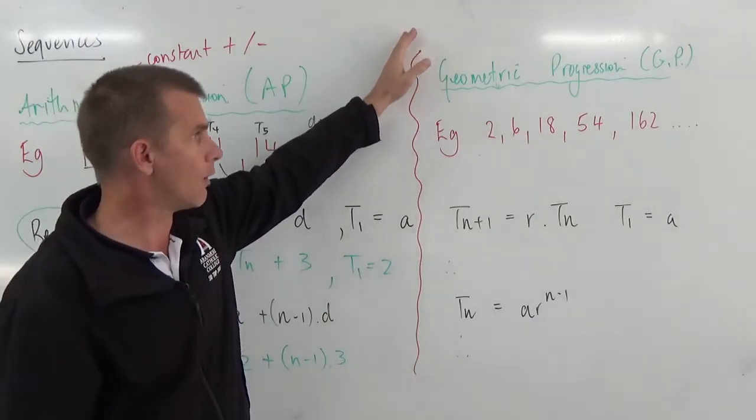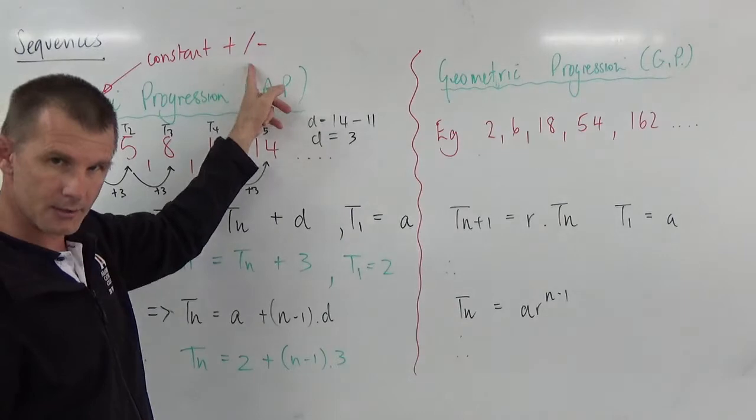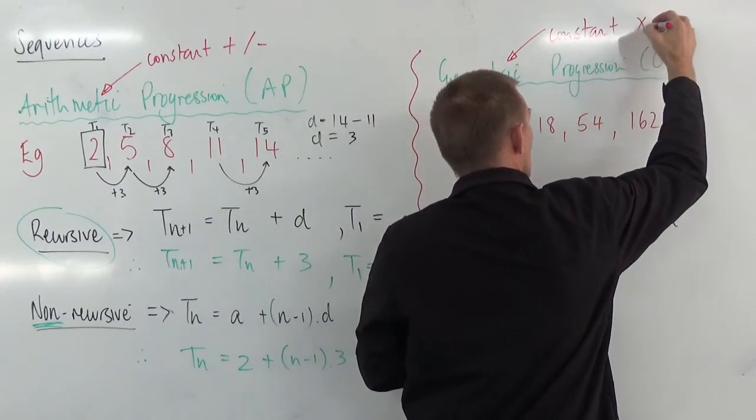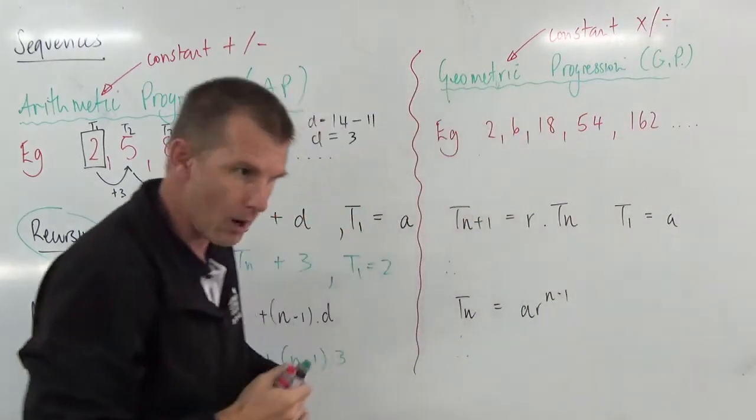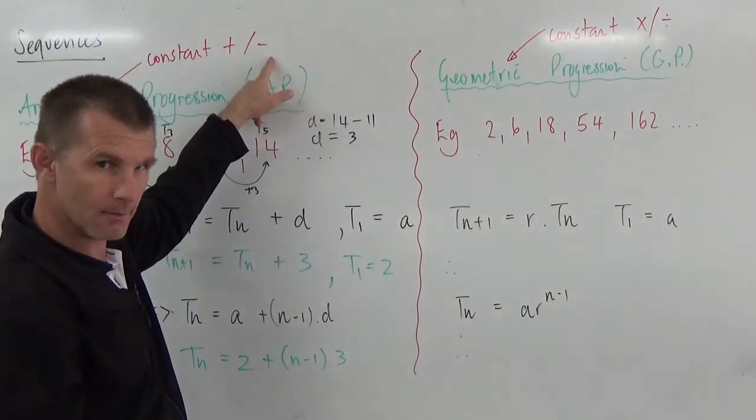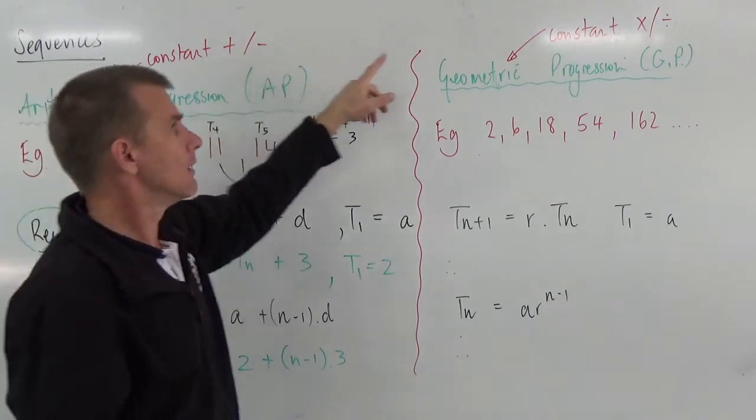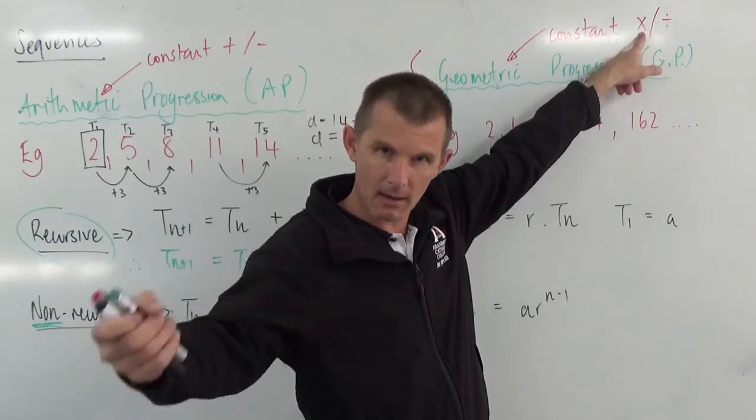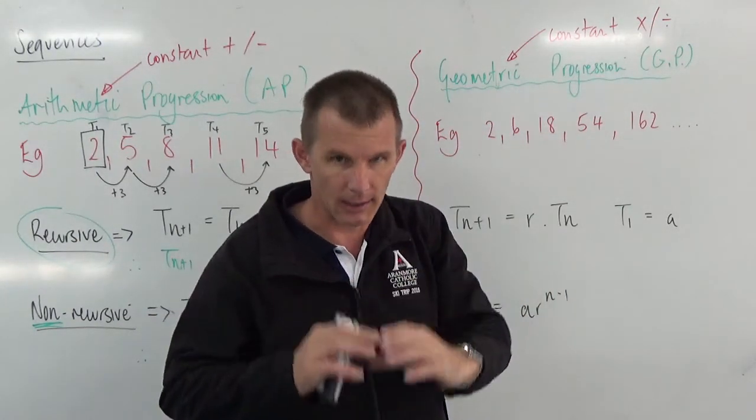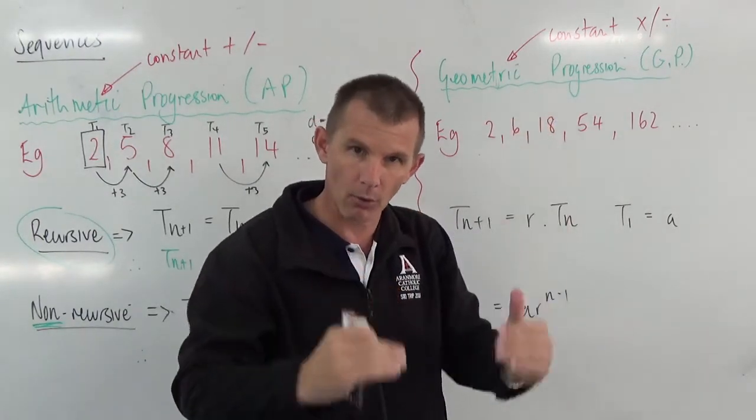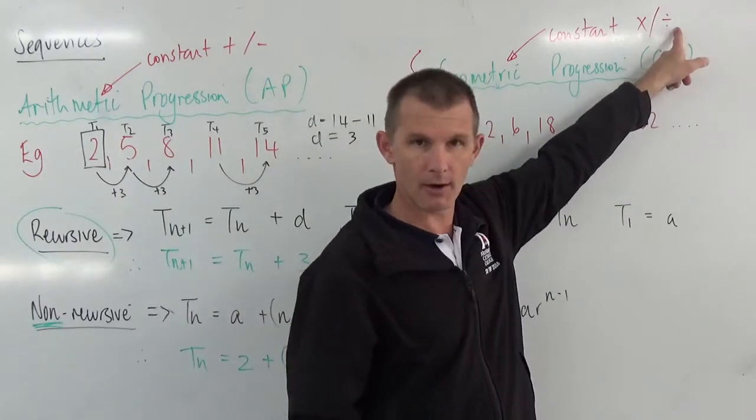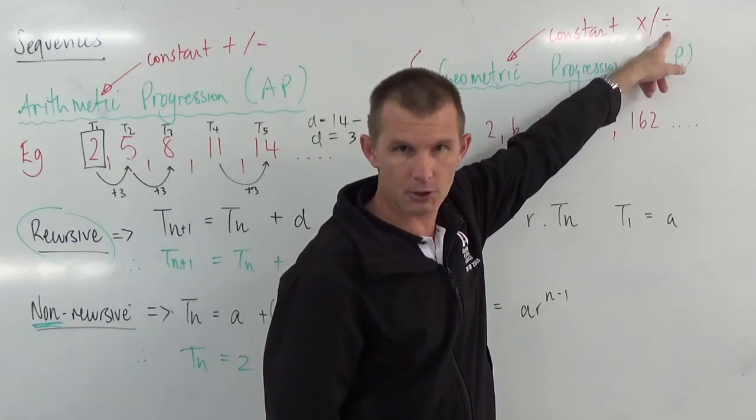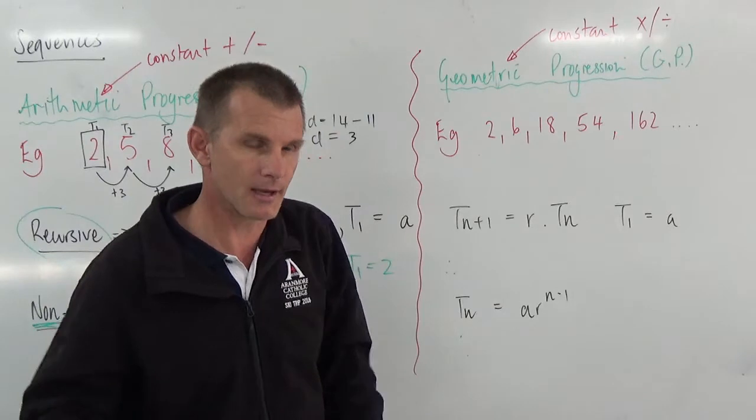Geometric progressions, they are ones where we're not looking for a constant addition or subtraction. We're actually now looking at constant multiplication or division. In a similar way, I could add a negative number and that's the same as subtracting. If I multiply by a number bigger than one, then my terms are going to be getting bigger. If I multiply by a number that is less than one, between zero and one, my terms will get smaller. That's the same as dividing. So think about this. I can multiply by a half or I can divide by two. They're going to end up doing the same thing.